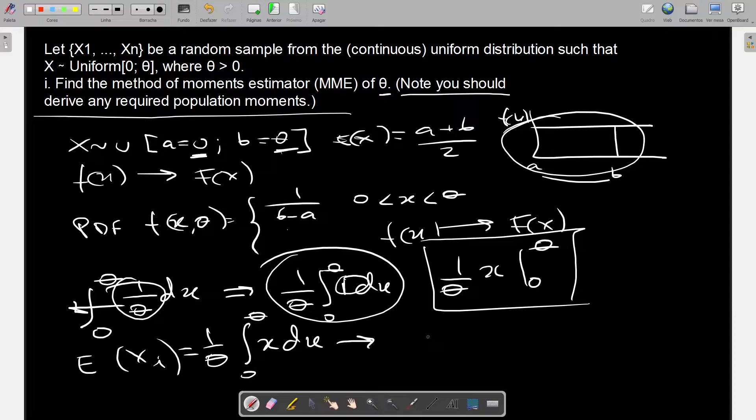And this is where it becomes interesting, because now you have 1 divided by theta, and when you integrate it, you have x squared divided by 2. And this is between 0 and theta. So you're going to get theta inside, squared, divided by 2, and the other one is 0.